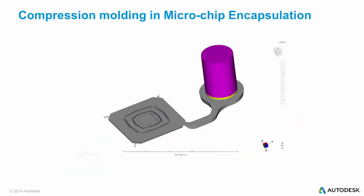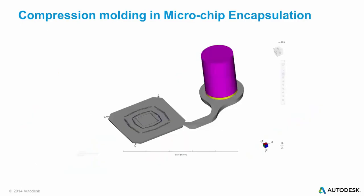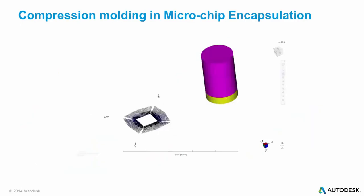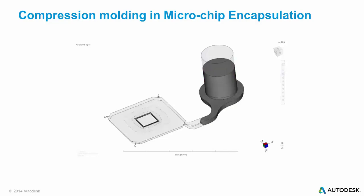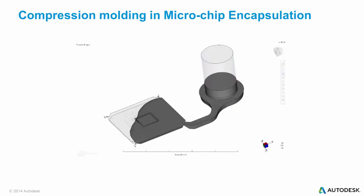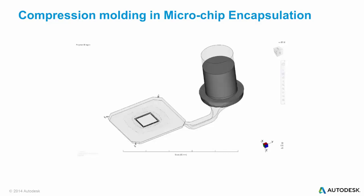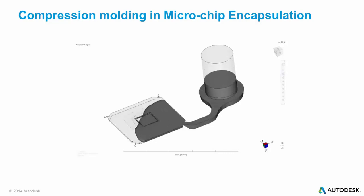The 3D compression molding capabilities can also be used to simulate the resin transfer process for microchip encapsulation. The material in the transfer pot in this case is the charge, and the mold will fill due to the compression of the transfer pot into the cavity.